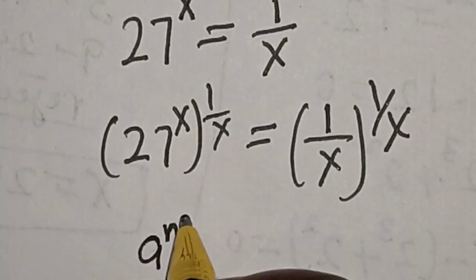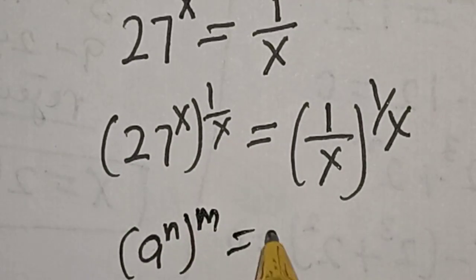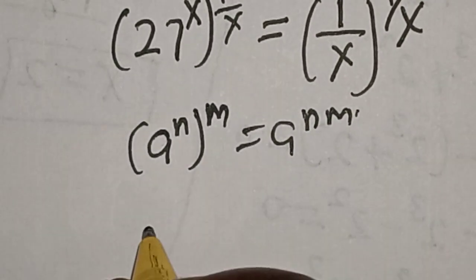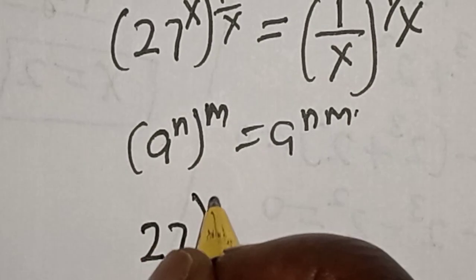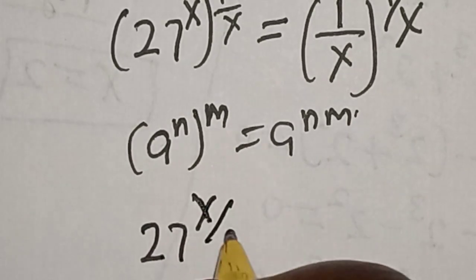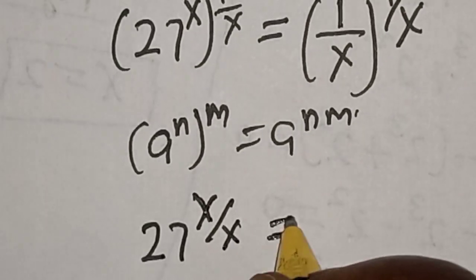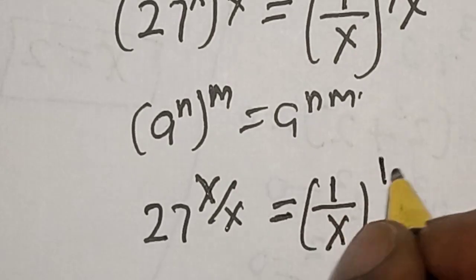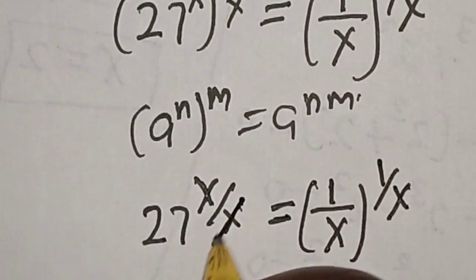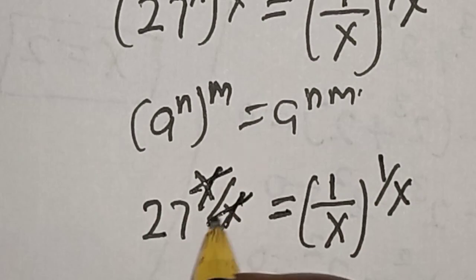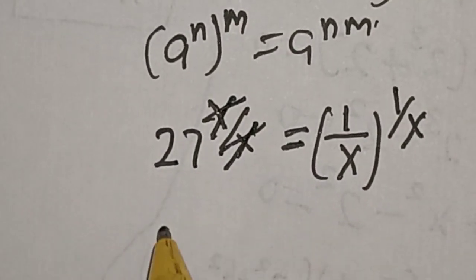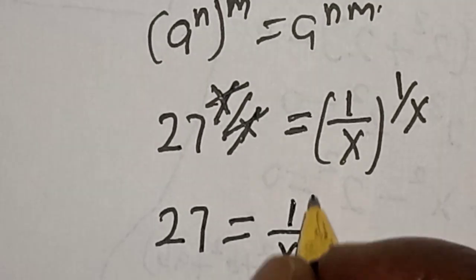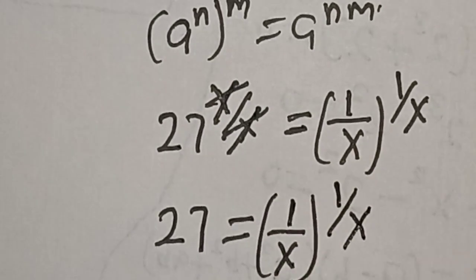Remember this rule: a raised to power n, raised to power m, is equal to a raised to power n times m. Then we have 27 raised to power x over x, is equal to 1 divided by x, raised to power 1 divided by x. This one will cancel this, so we have 27 is equal to 1 divided by x, raised to power 1 divided by x.